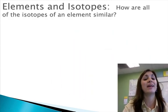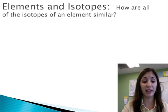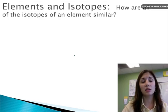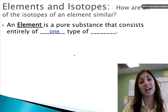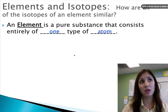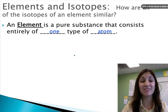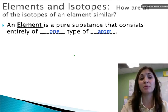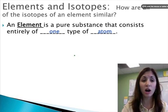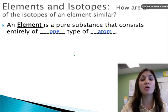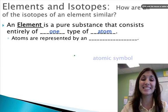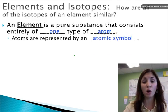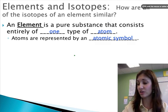So let's talk about what an element is and what some variations on an element might be. All elements are pure substances that consist entirely of one type of atom. So, for example, carbon is an element. Carbon is composed of carbon atoms. The carbon atom is defined in that it has six protons. Its atomic number is six. All elements have their own specific type of atom. And each of these atoms is represented by an atomic symbol. That's the C when we're talking about carbon or O when we're talking about oxygen.